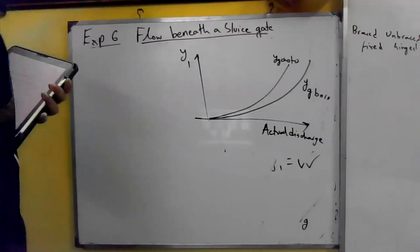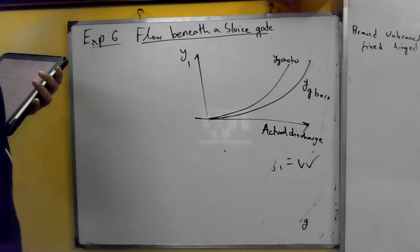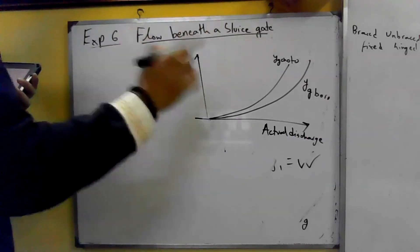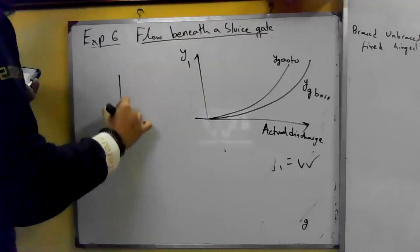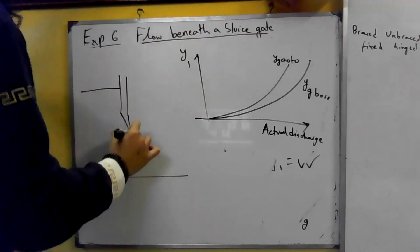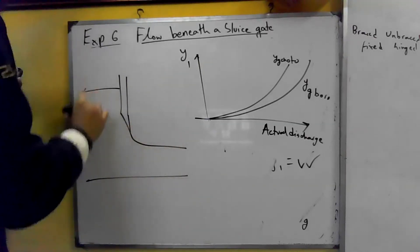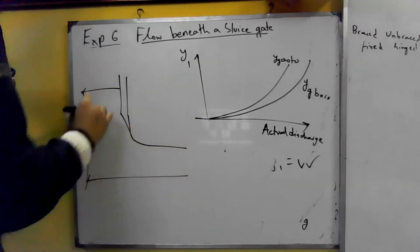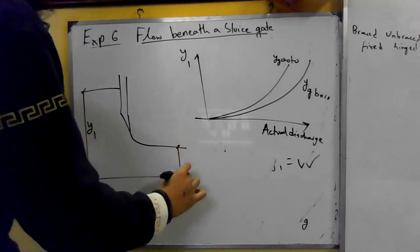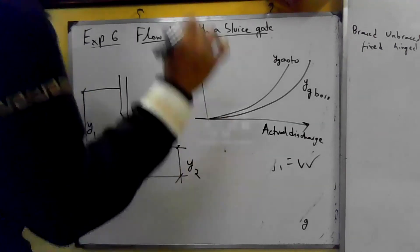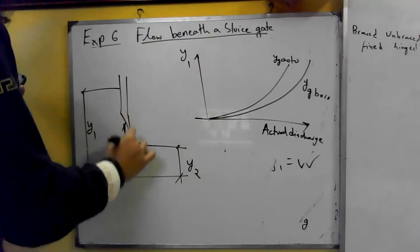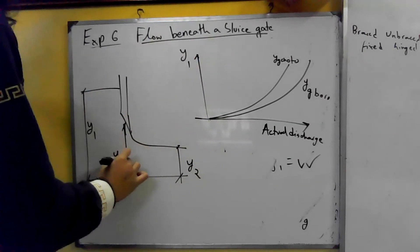YG is small and Y1 is small. Y1, YG, and Y2 are very important variables. Y1 will always be upstream depth. Y2 will always be downstream depth. YG is the gate opening — this is YG.